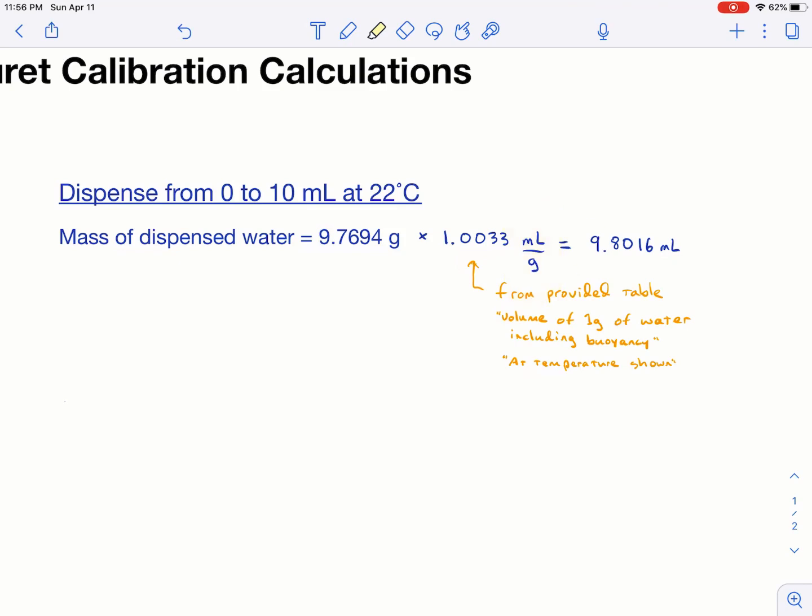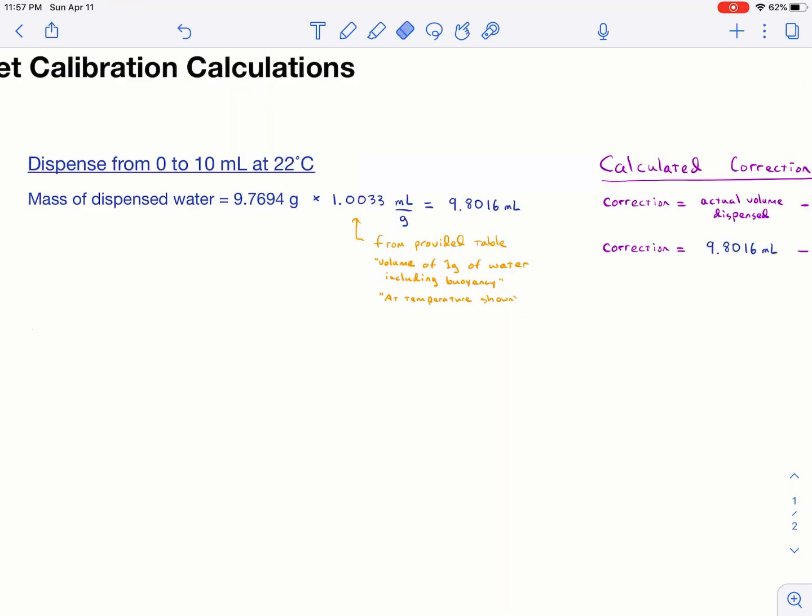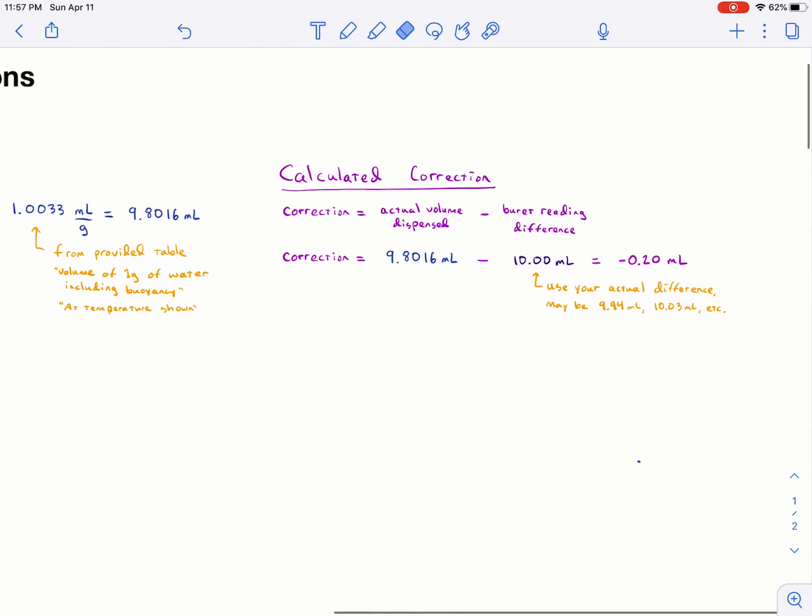And then this is the volume of water that you actually dispensed at this temperature when you went from zero to 10 mils. And to calculate the correction from that, you need to take the actual volume dispense and subtract the burette reading difference from it. And that's the order. You want actual minus what it should have been. Because that way, if you dispense less than you think you did, you get a negative correction. If you dispense more than you thought you should have, then you get a positive correction. And that kind of makes sense.